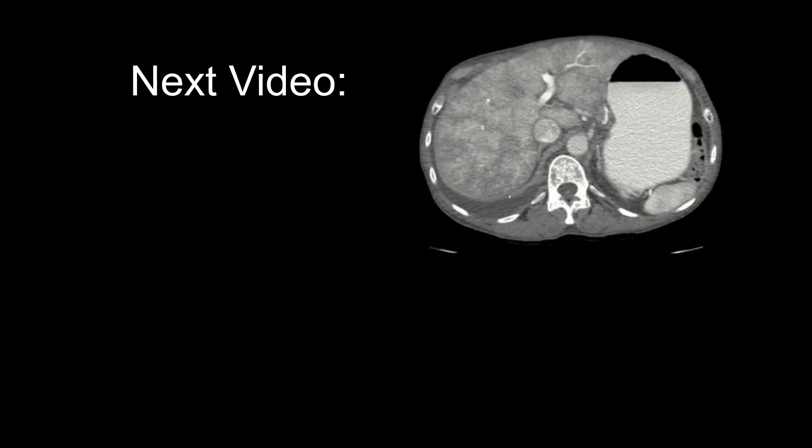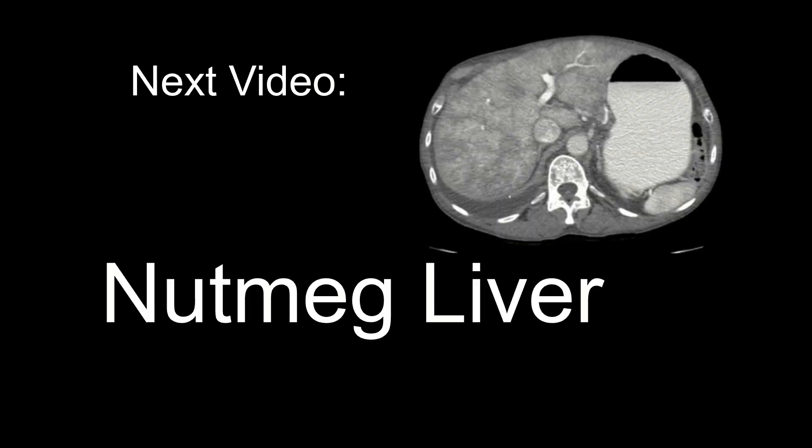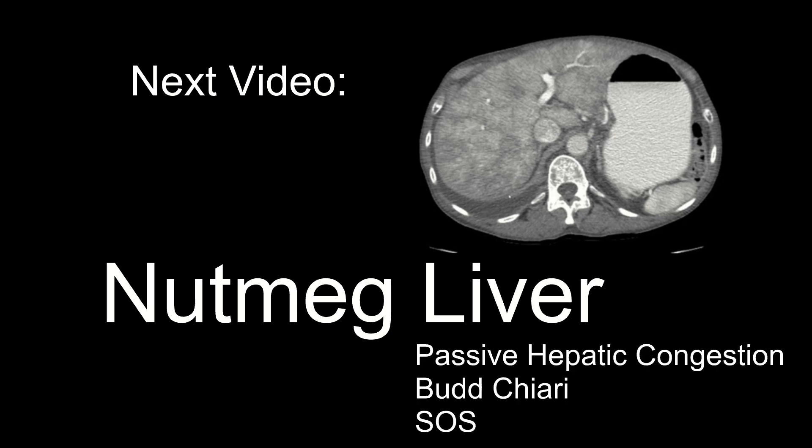In the next video, we will introduce the topic of a very heterogeneous mottled nutmeg-type appearance of the background liver and the associated pathologies — that is passive hepatic congestion, Budd-Chiari, and SOS. We'll then wrap up background liver and move on to focal liver lesions.